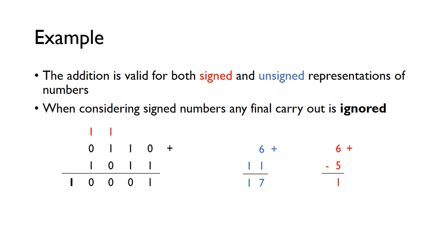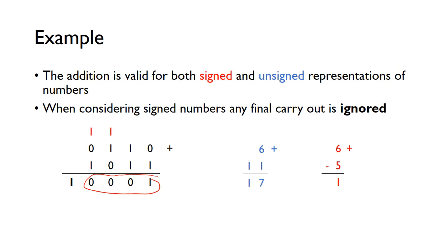This addition also works for signed numbers. 0110 is still six, but 1011 as a signed number is minus eight plus two plus one, which equals minus five. So six plus minus five equals one, which is what we get if we ignore the final carry-out. When adding signed numbers, the final carry-out is meaningless and must be completely ignored.